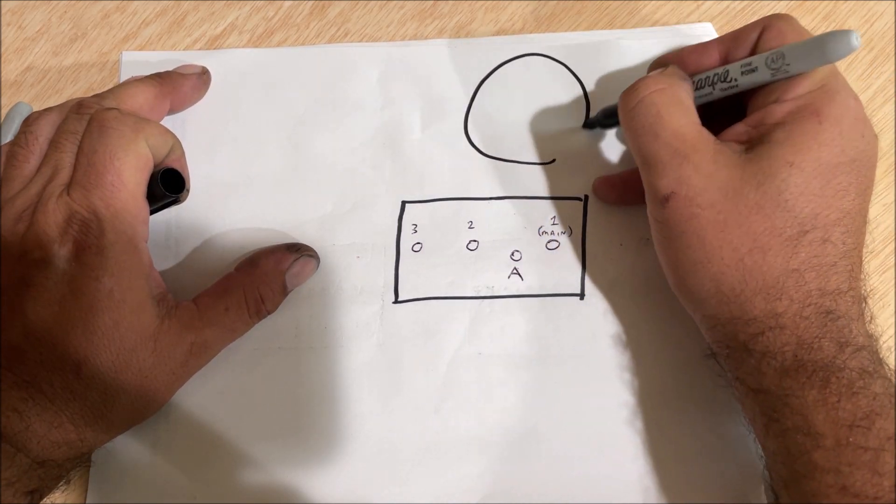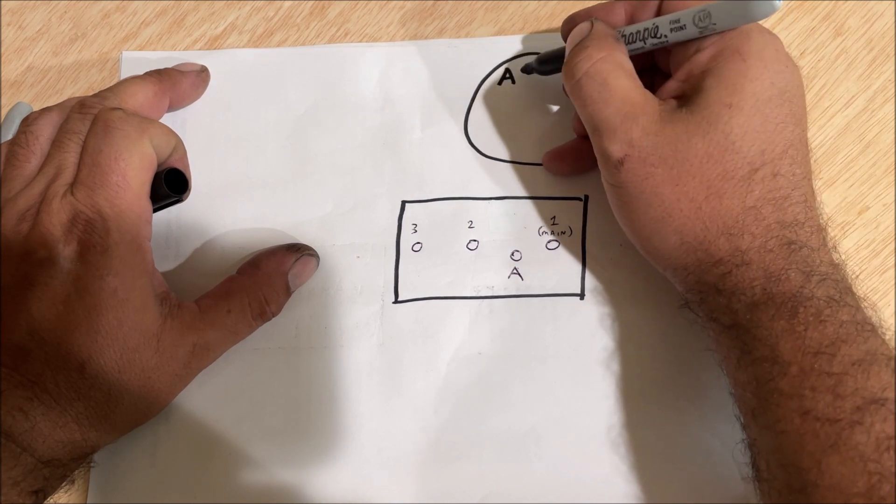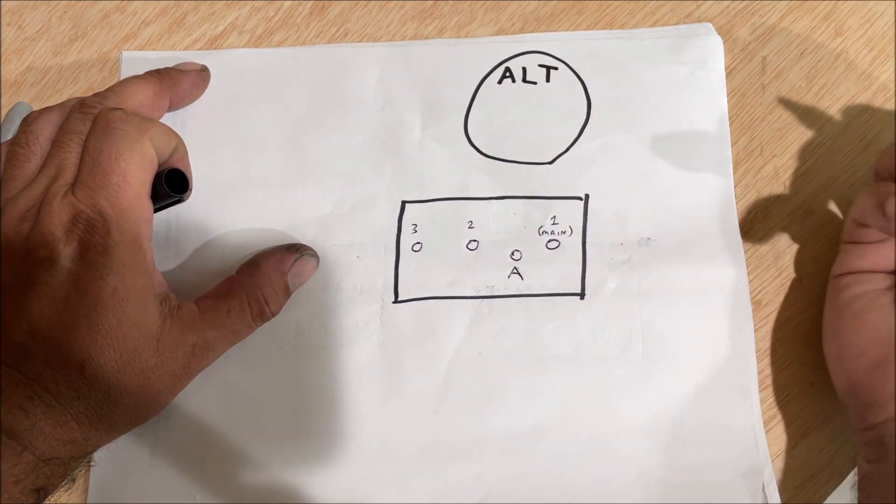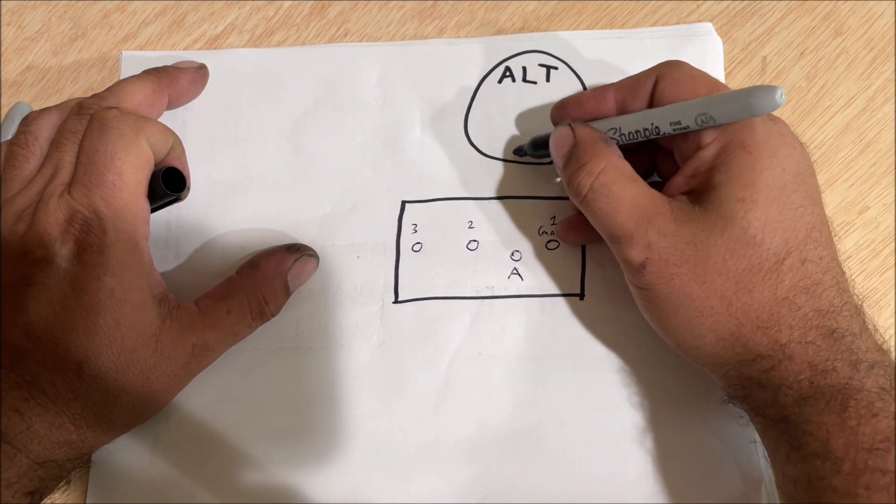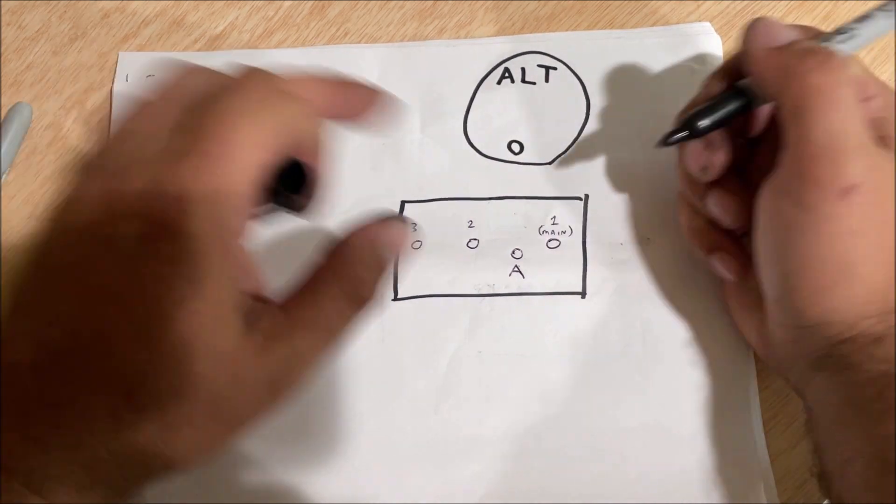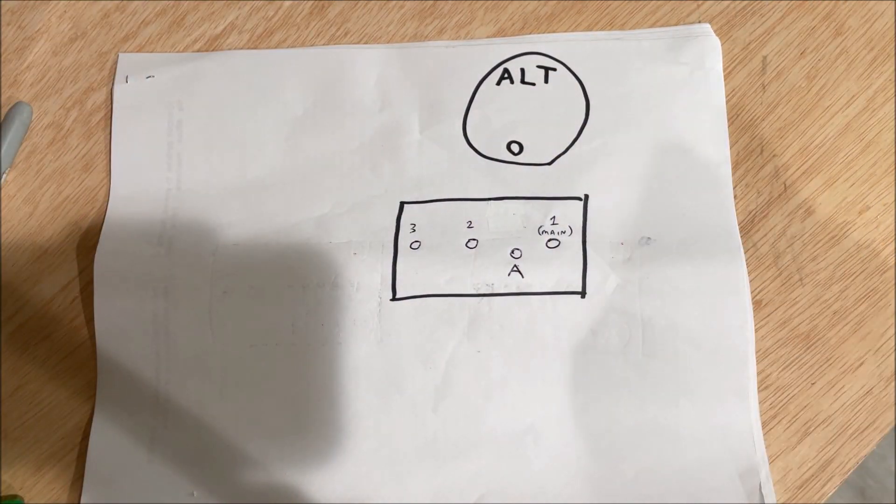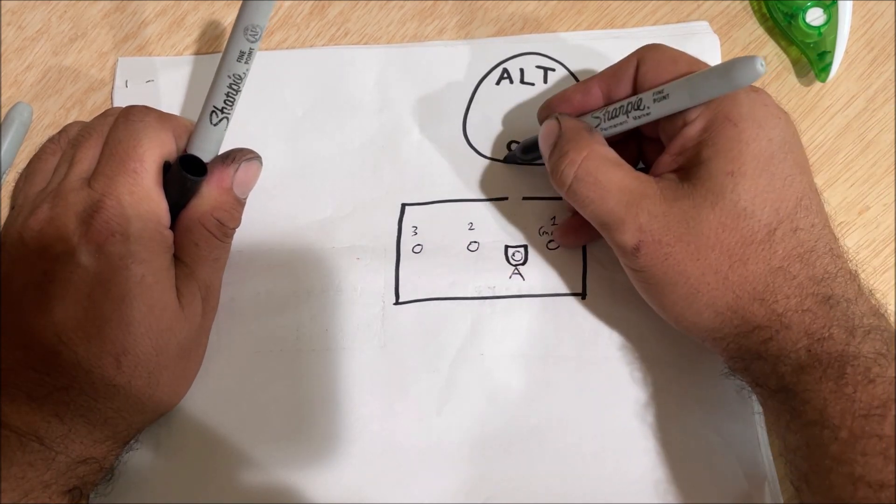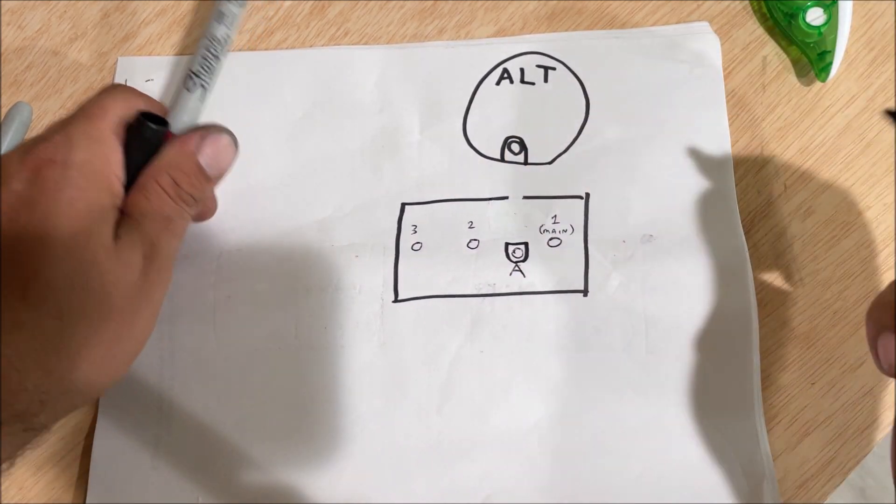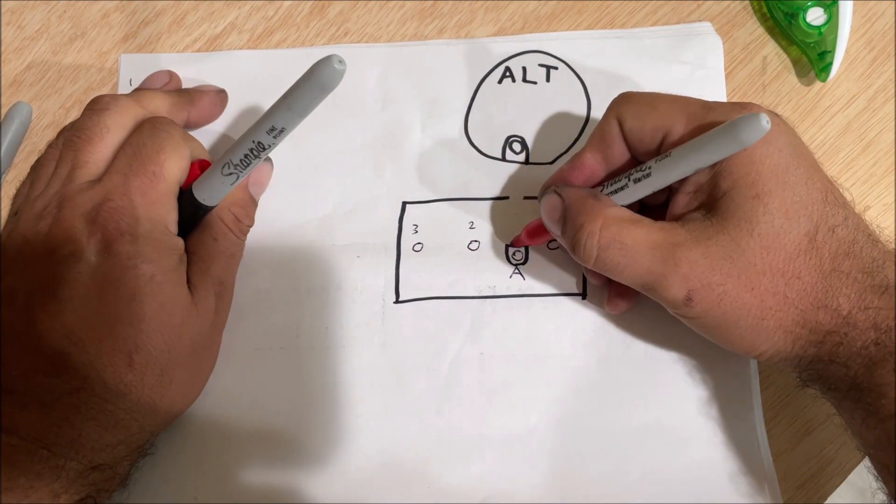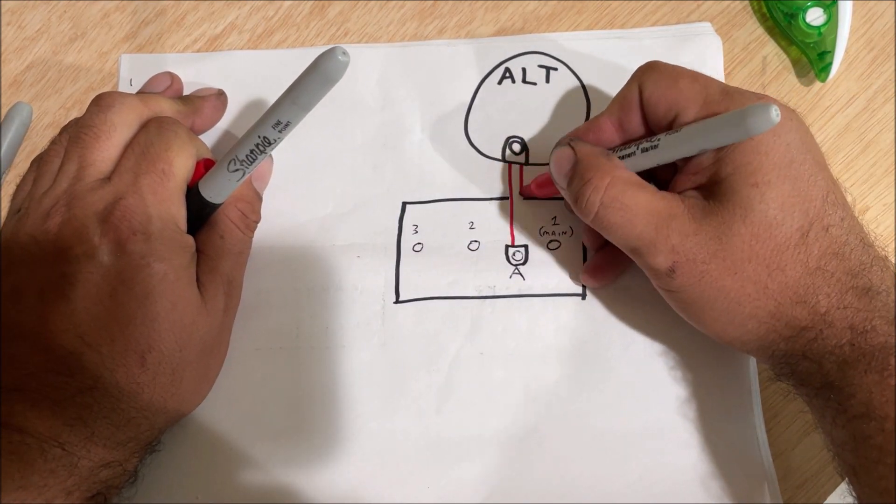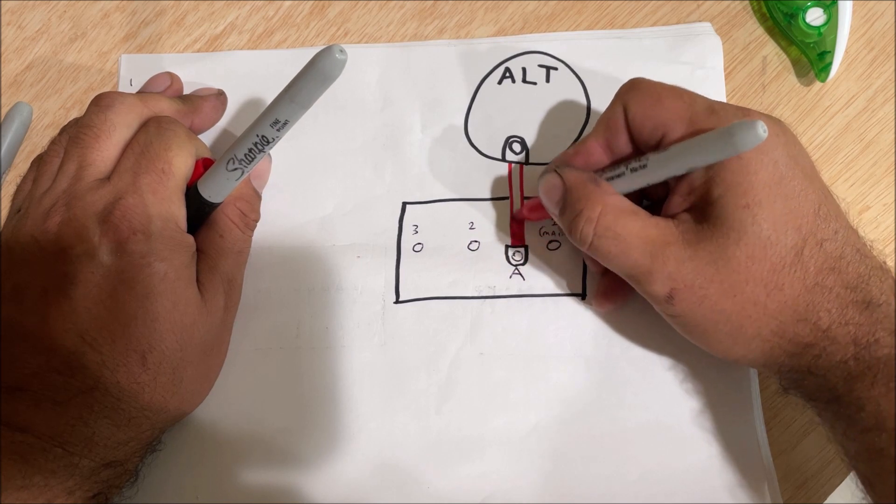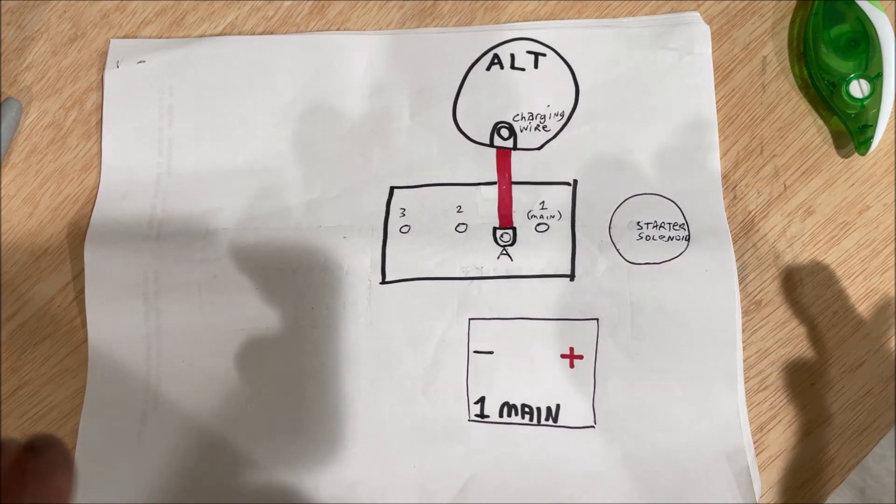On your alternator you have a big fat wire, the charging wire or battery wire. The biggest fat cable on there, usually by itself. You're going to unhook that wire from wherever it goes, it does not matter. And you're going to wire it straight to A. No questions asked, it doesn't even matter, just wire it just like that. That's how it's done.